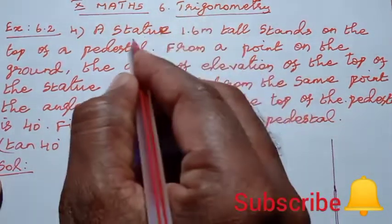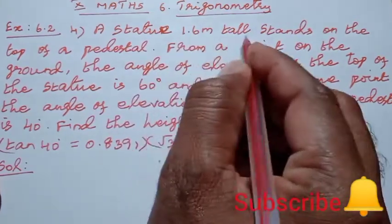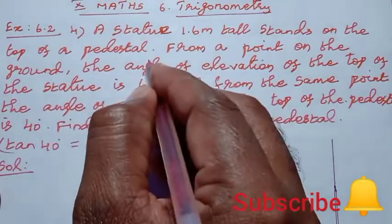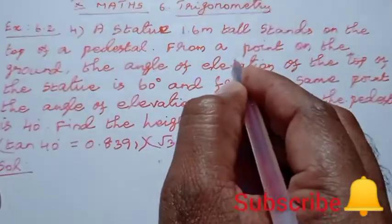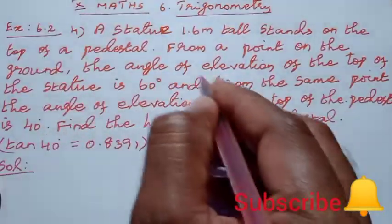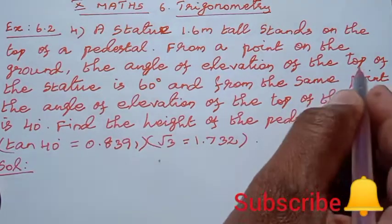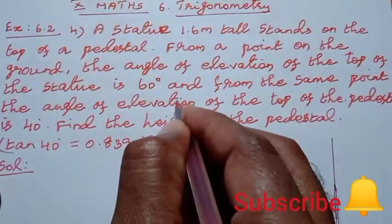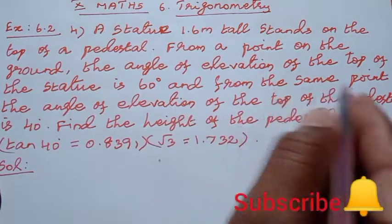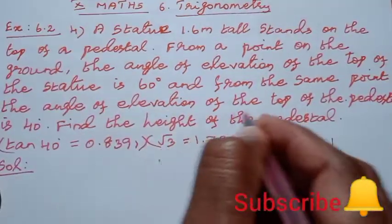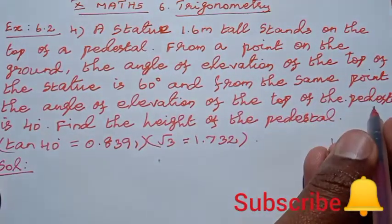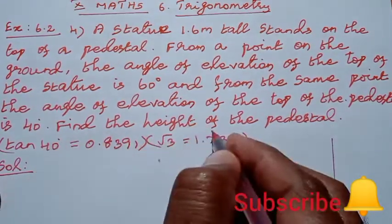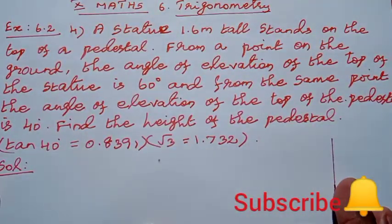See the question. A statue 1.6 meter tall stands on the top of the pedestal. From a point on the ground, the angle of elevation of the top of the statue is 60 degrees. And from the same point, the angle of elevation of the top of the pedestal is 40 degrees. Find the height of the pedestal.